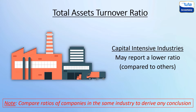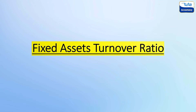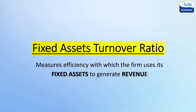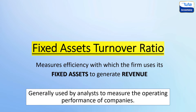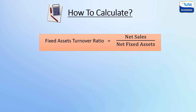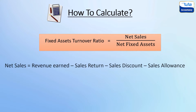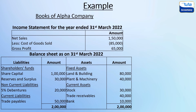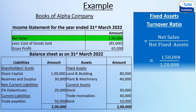Next, moving on to the fixed assets turnover ratio — this measures the efficiency with which the firm uses its fixed assets to generate revenue. It is generally used by analysts to measure operating performance. It is calculated by dividing net sales by net fixed assets. Net fixed assets is the cost of fixed assets less accumulated depreciation.